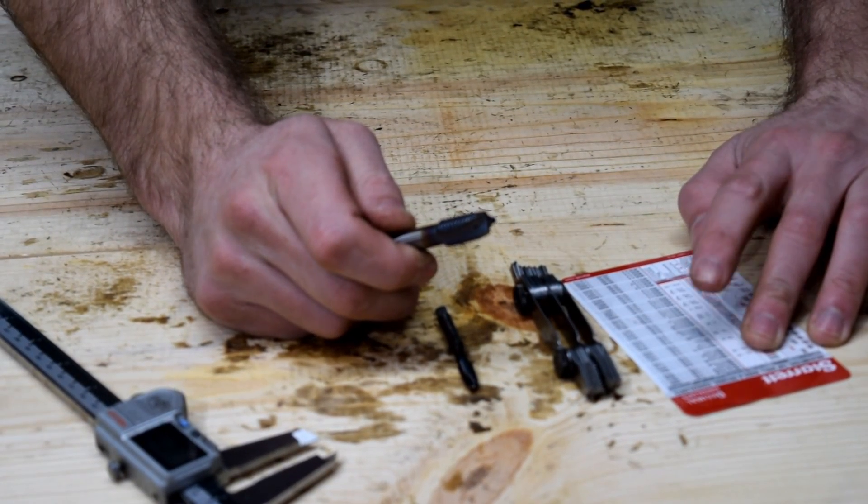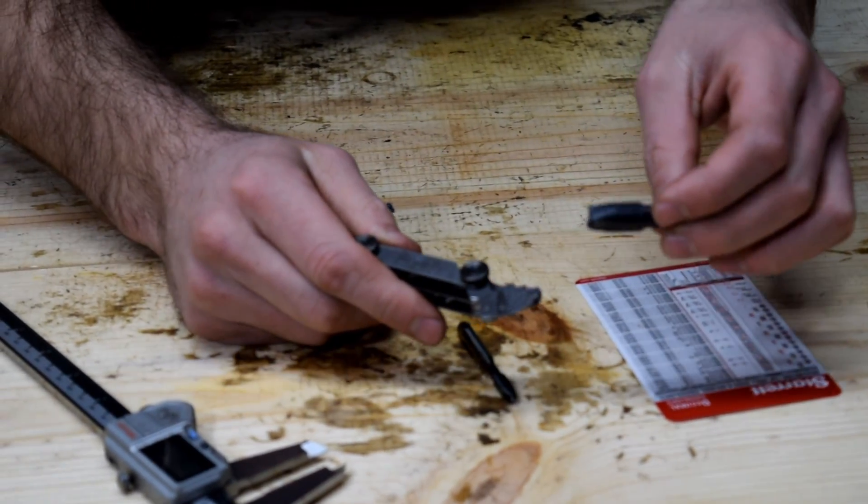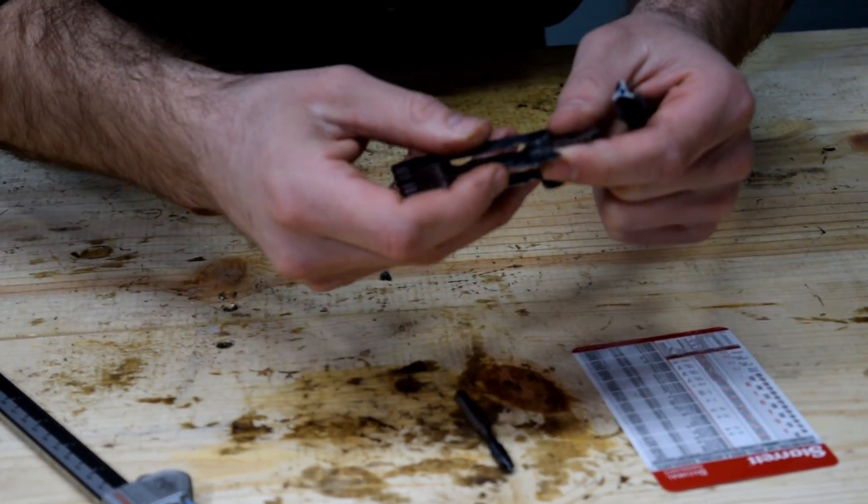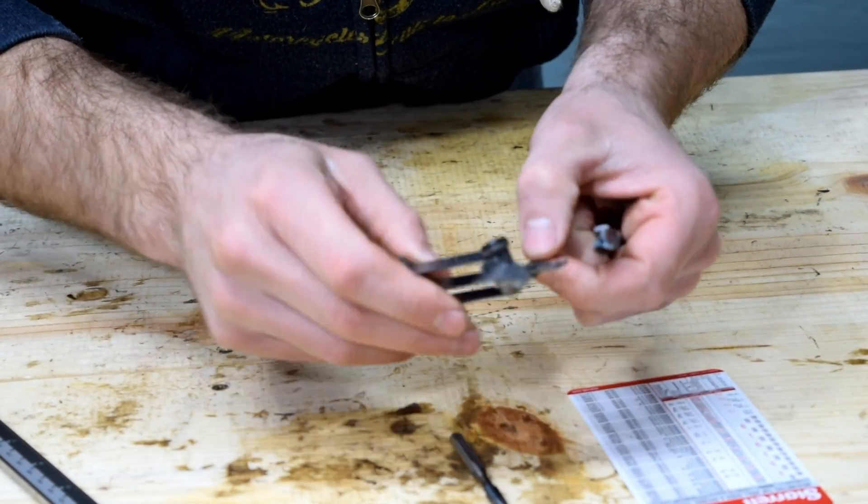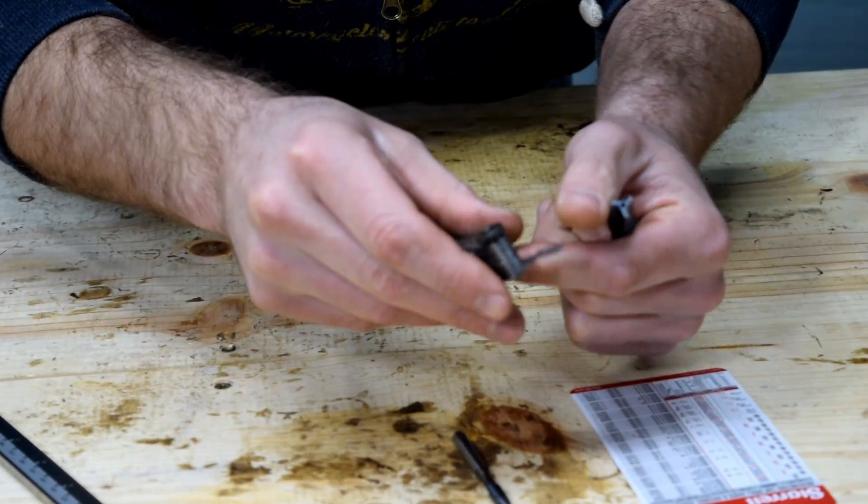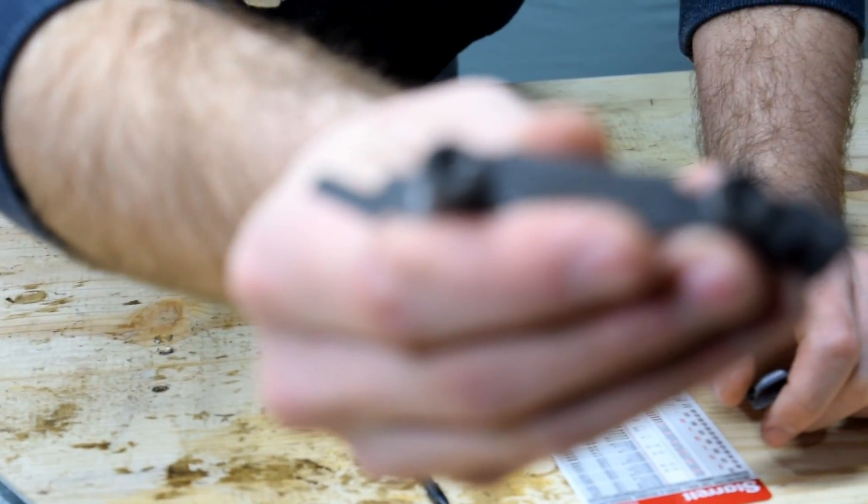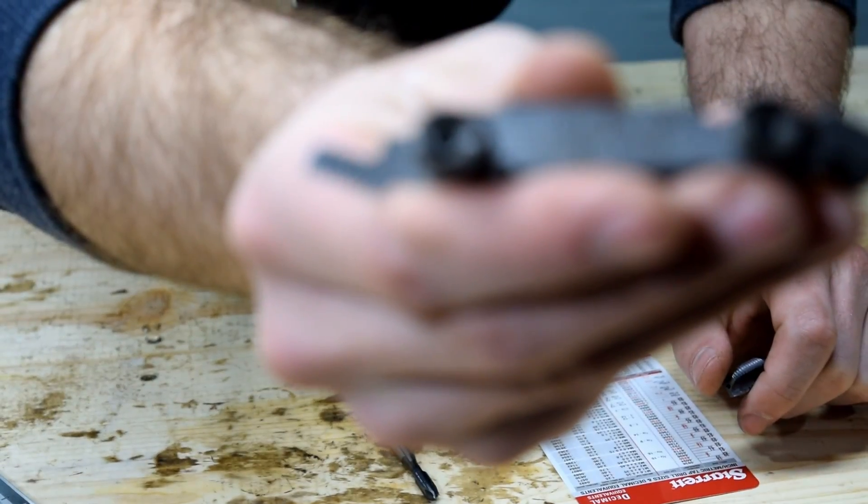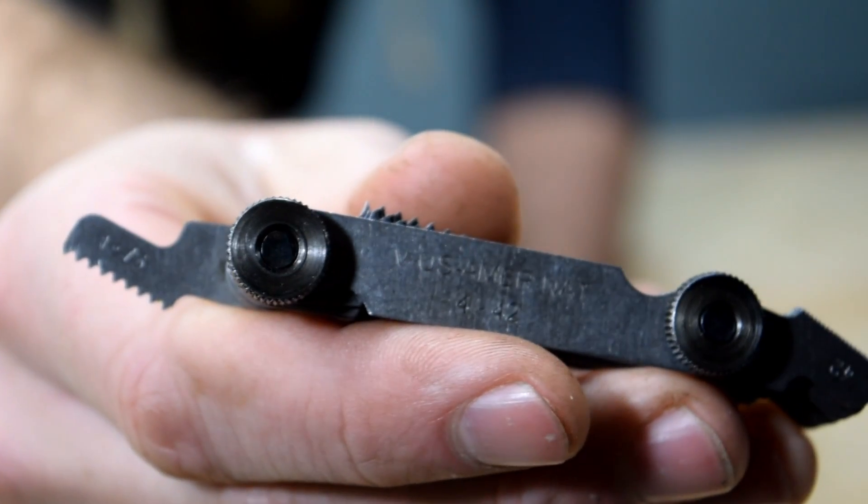We'll try 1.75 first just because it looks like it's a coarse thread. We'll get to our metric side and we'll look for 1.75, which is right... there we go. We got our 1.75 thread pitch gauge for metric.